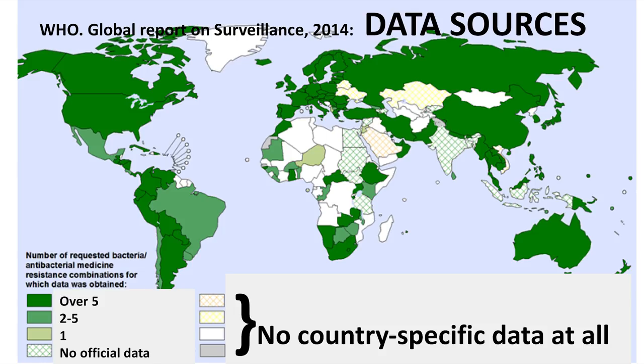In actual fact, the data supporting these projections is rather few. Many African countries don't have surveillance data. A recent WHO surveillance report didn't include data from many countries — all the countries that aren't green submitted no data. We don't know how bad the problem is, and information about the scale and trajectory of resistance is critical to deciding how we're going to control it.